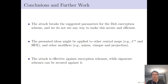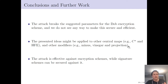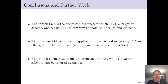In conclusion, our attack breaks the suggested parameters for the DUB encryption scheme. It's unclear how to tweak the scheme to be both secure and efficient — adding more modifiers ruins decryption time. The ideas could also be applied to other central maps like C-Star and HFE, and other modifiers like minus, vinegar, and projection. This is very effective against multivariate encryption schemes, but signature schemes or big field signature schemes can easily be protected, for example by choosing a significant number of minus modifiers while still being efficient.